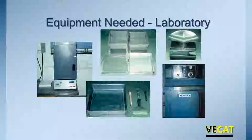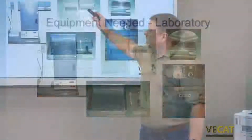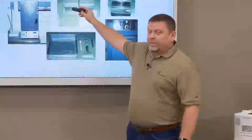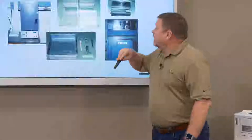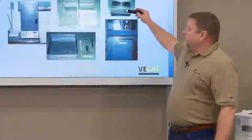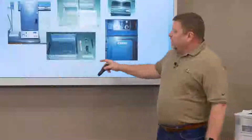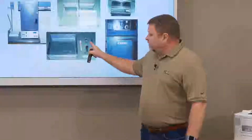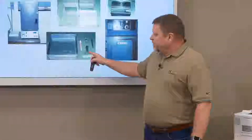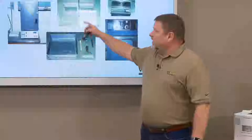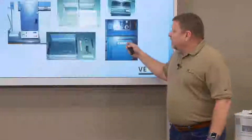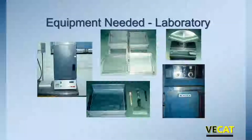Equipment needed includes the furnace, the sample pans or baskets that we load the sample into, a scale to get a sample weight, a larger pan and spatulas and brushes to clean the aggregate out of the sample pans. We also need an oven, because if the mix has cooled down and gotten hard, we need to heat it back up so that it becomes workable to load into the baskets.